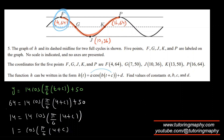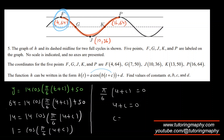Cosine equals 1 when the inside is 0. I'll take the simplest case: π/6 · (4 + C) = 0, which means 4 + C = 0, so C = −4. Remember, this is not the only solution — there are various possible A and C combinations.